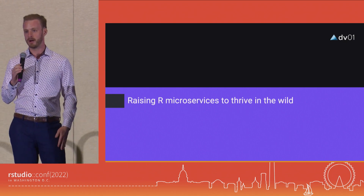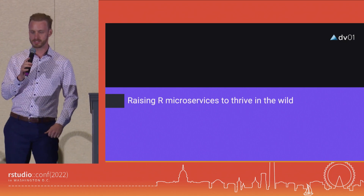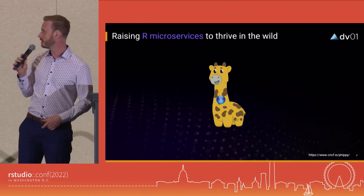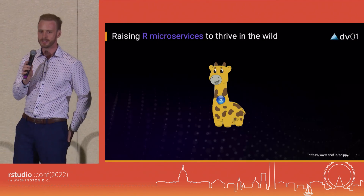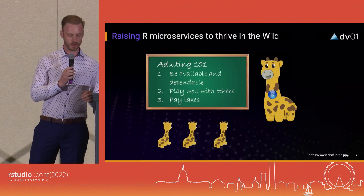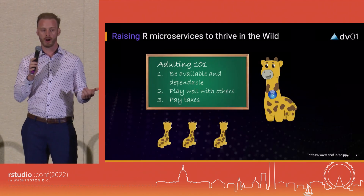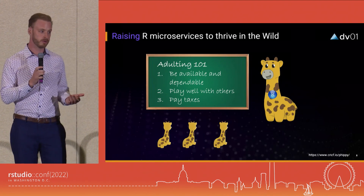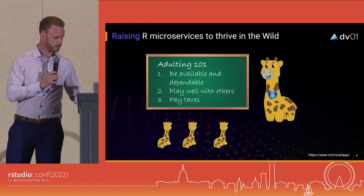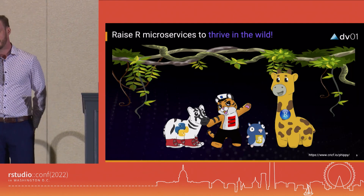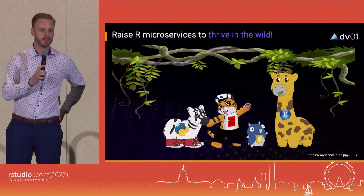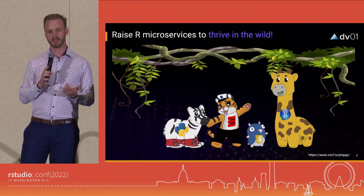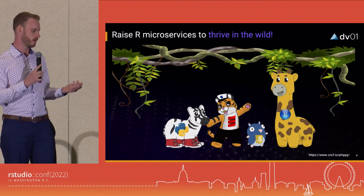So I'm going to tell you how you can raise an R microservice to thrive in the wild. Here we have our R microservice — this cute little giraffe. The first thing we're going to do is put our R microservice through school, teach it what to do once we release it into the wild. The end result is that it can interact with other microservices and applications written in different languages seamlessly.